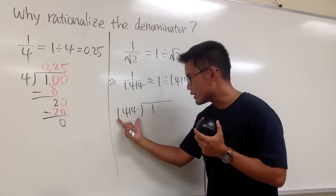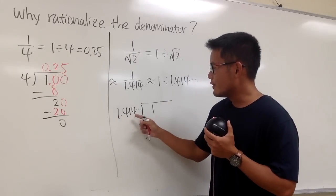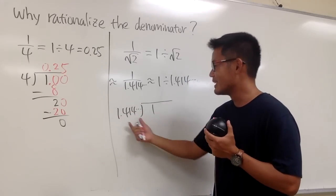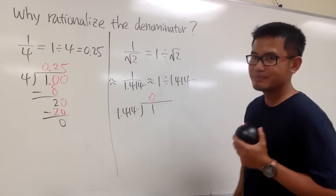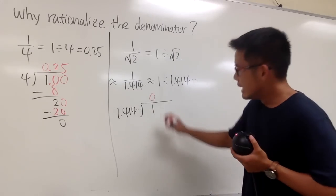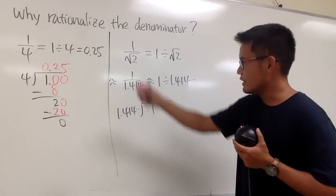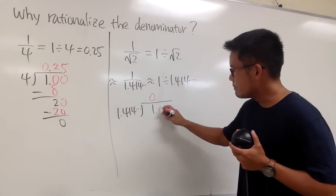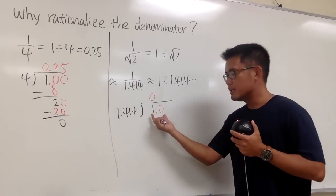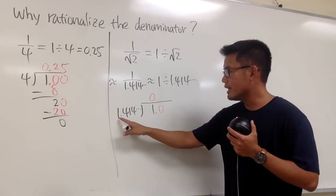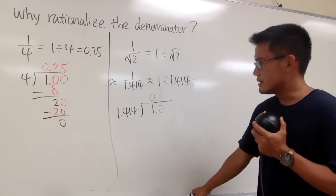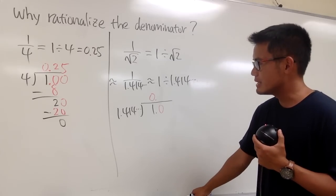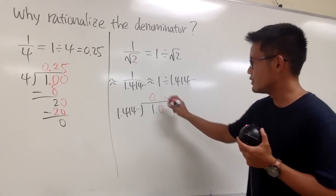We're going to ask ourselves, 1.414 something something something goes into 1 how many times? 0 times. Put down 0. That's good, it's a big progress. Put down decimal point, just like over there. And then 1 is the same as 1.0. Now I can look at this as 10. And now, this goes into 10 how many times? It's kind of hard already. But I will tell you, it's probably about 7.